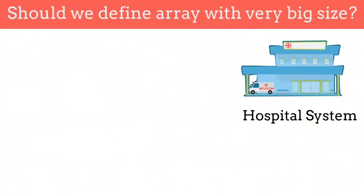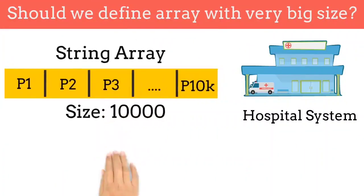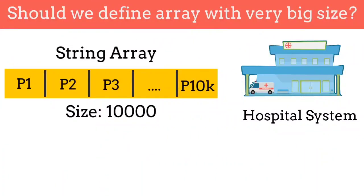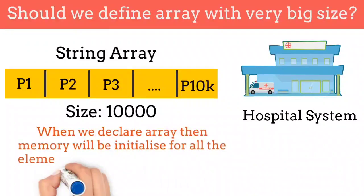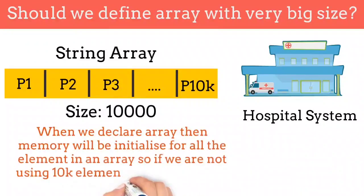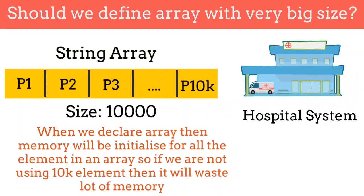Some of you might say that we should define the size of array as too large, like 10,000. But when we define the size of array, Java will allocate the memory for all the elements in an array. Means if we are defining the size of array as 10,000, then Java will allocate the memory for all 10,000 elements. And if we are storing only 100 or 200 elements, then we are wasting a lot of memory. So the most important limitation of an array is we have to define the size of array while creation.